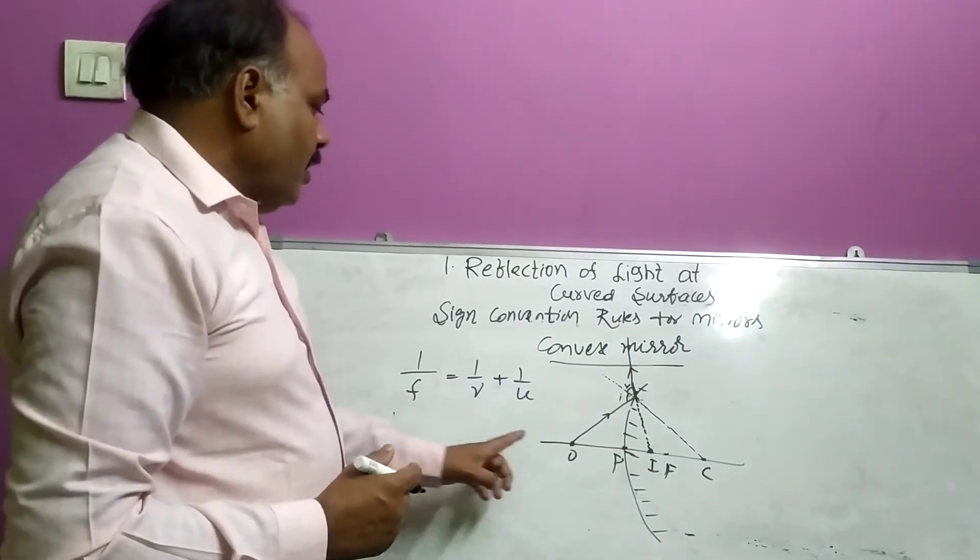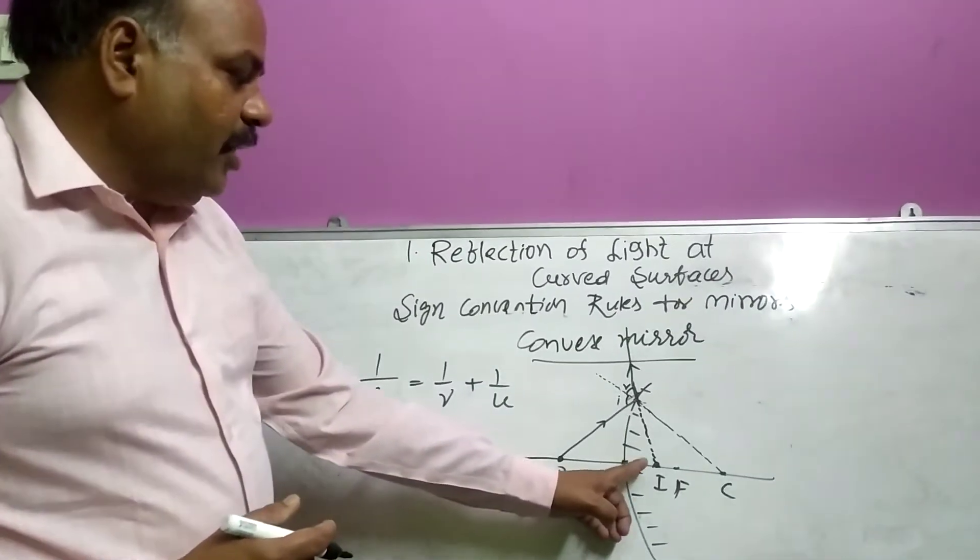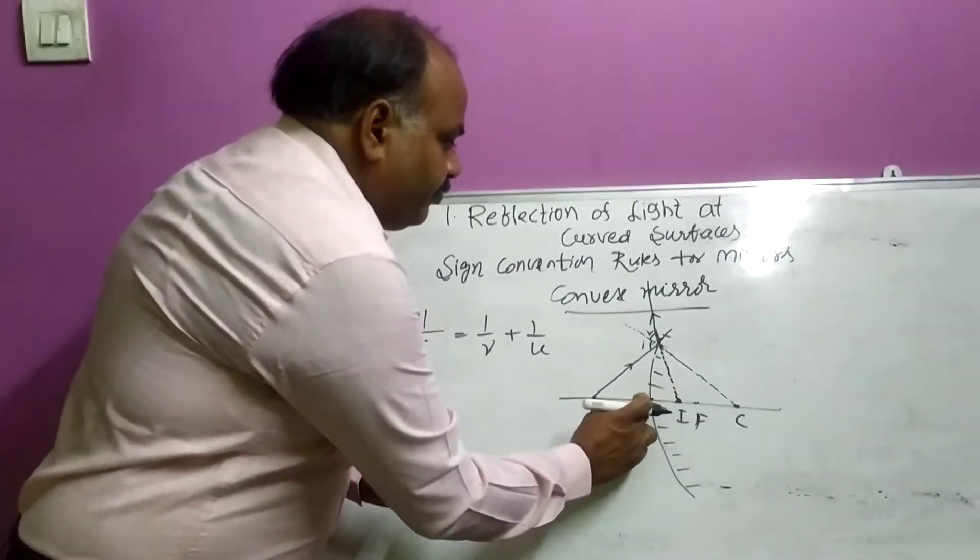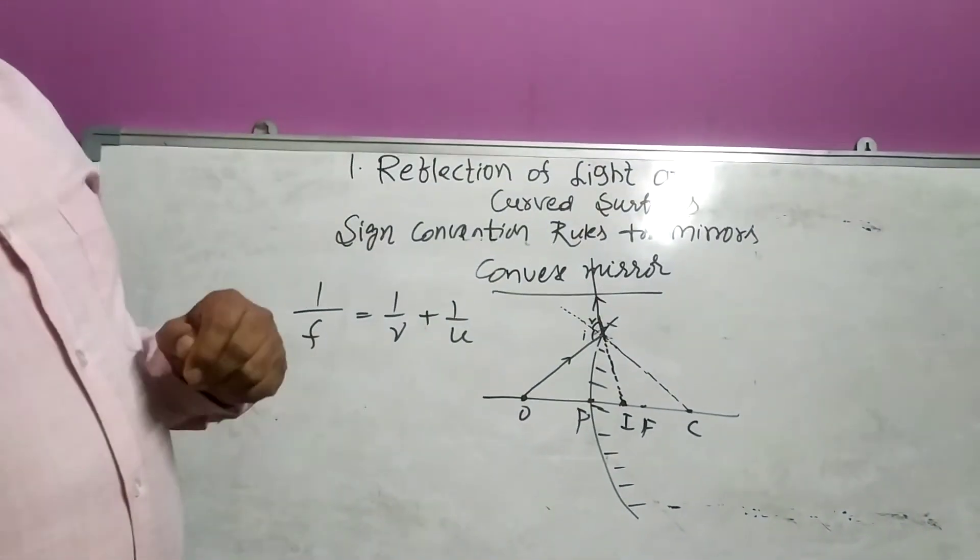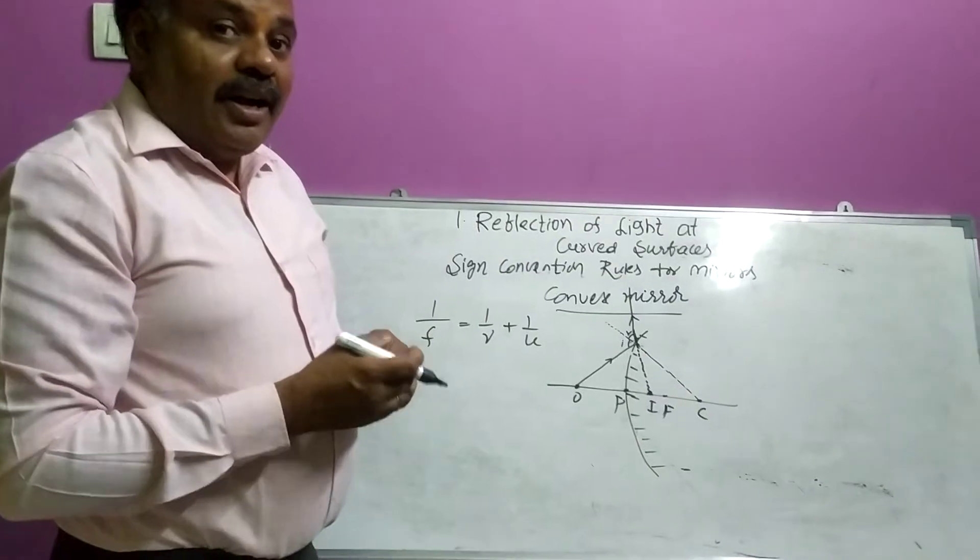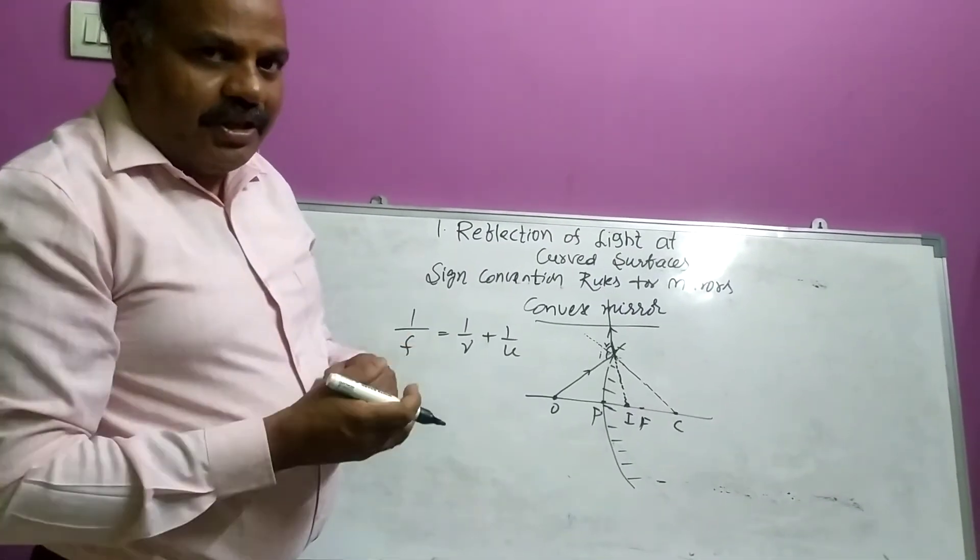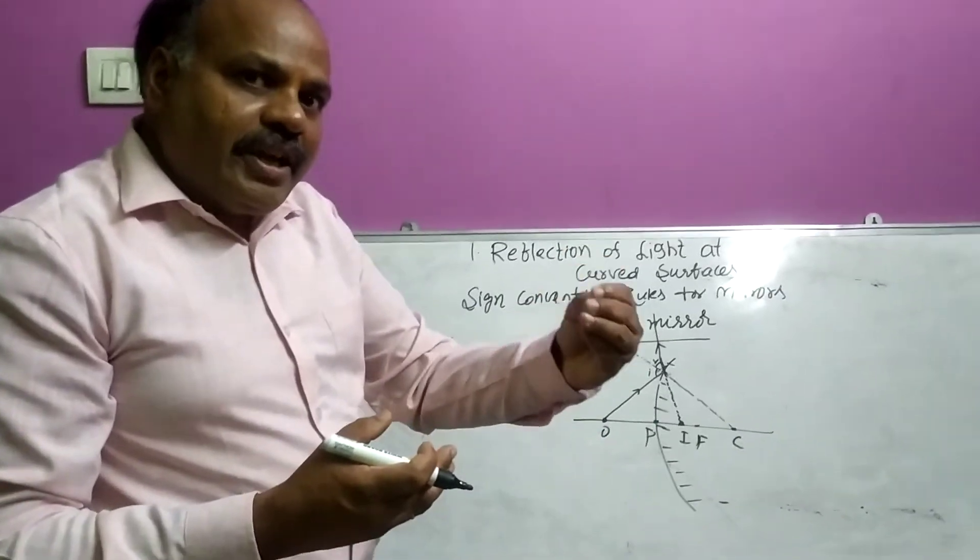By that, F means focal length. So from focal length P to F, this is focal length. See, second rule is there. If direction of incident ray and distance which is measured, if they are in same direction, that value is taken as positive.